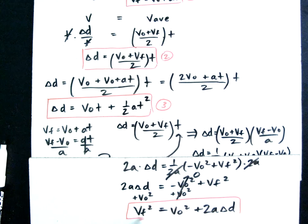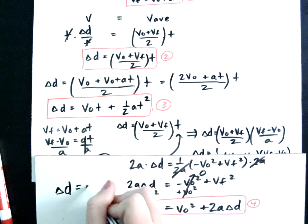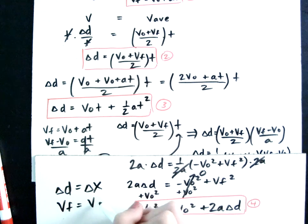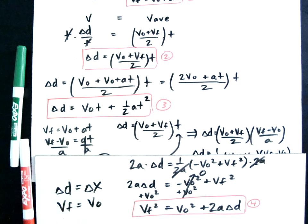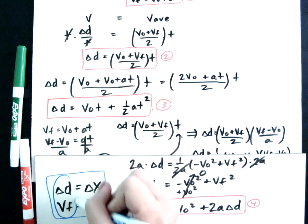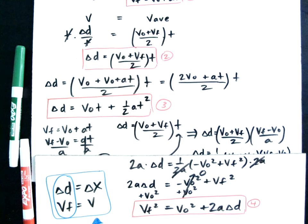And there's your derivation. Note that delta D is equivalent to delta X, and VF can also be written as V final. I'm accustomed to writing it one way, but the AP exam writes it slightly differently — they are the same thing, so don't get confused.